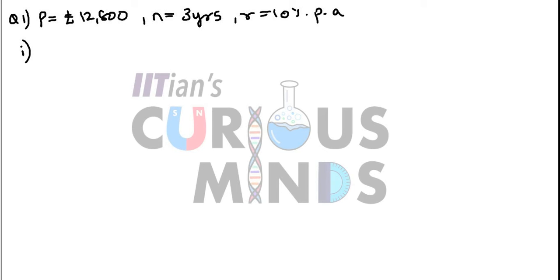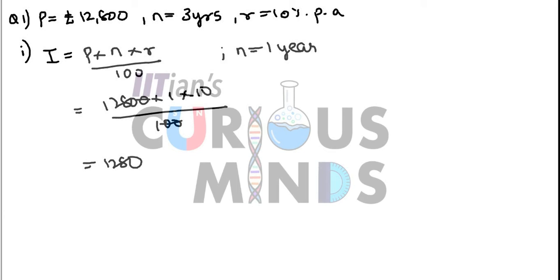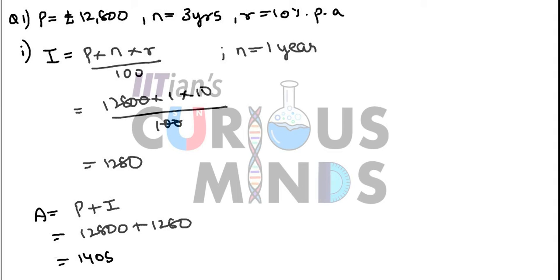Sub-part 1: Sum due to Ramesh at the end of the first year. We first find the interest using the formula: Interest = Principal × N × R / 100. Since we need the first year, N = 1 year. Therefore, Interest = 12,800 × 1 × 10 / 100 = ₹1,280. Therefore, amount due = Principal + Interest = 12,800 + 1,280 = ₹14,080.